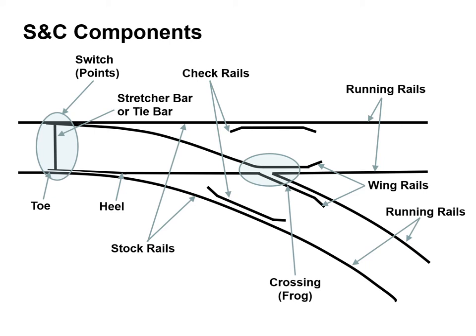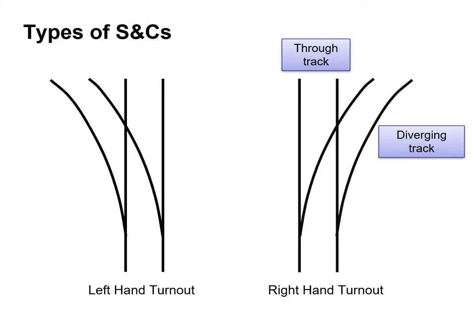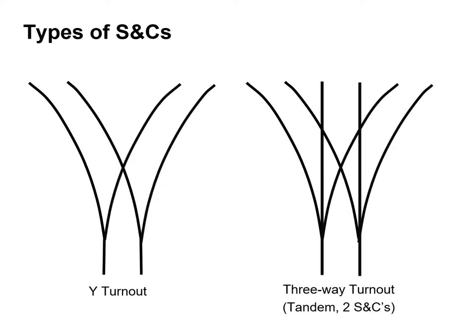The various components of an S&C unit include the switch rails, the toe, the heel of the switch rails, the stretcher bars, check rails, the crossing (sometimes known as a frog), the wing rails and the running rails. The term 'turnout' refers to a single railway junction comprising a switch and a crossing, but generally in the railway industry they'll be referred to as S&C units. We can have a left-hand turnout or a right-hand turnout, a Y turnout, and a three-way turnout — often called a tandem turnout because it has two switches and crossings, although it has three routes.